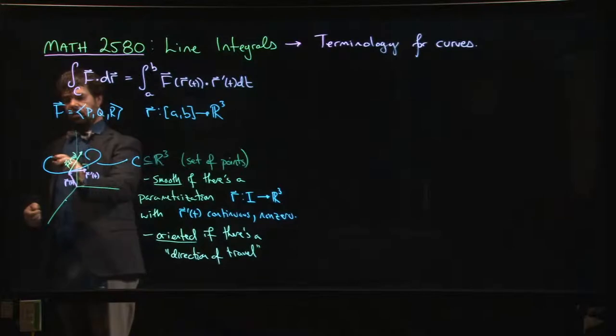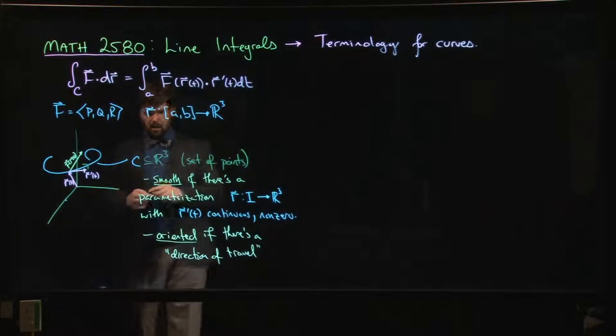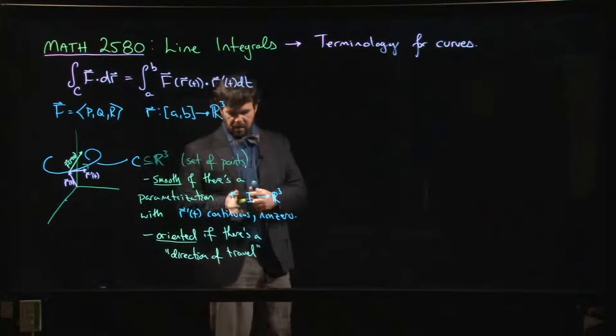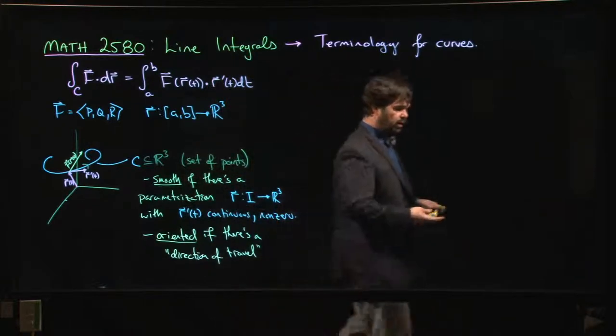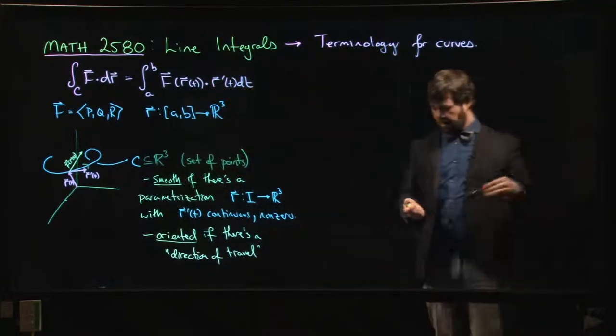So we start here, we follow along, and we make it to the end. And there's sort of a reasonable expectation: if you have an orientation for your curve, that when you parameterize, this should sort of match the orientation of the interval I that you're using to parameterize.